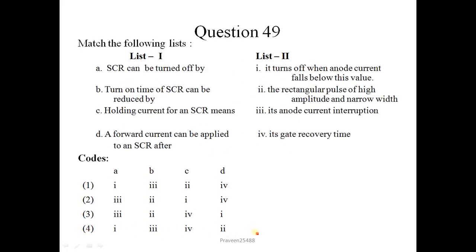Question number 49: Match the following list. SCR can be turned off by its anode current interruption. The turn on time of SCR can be reduced by the rectangular pulse of high amplitude and narrow width. Holding current for an SCR means it turns off when anode current falls below its value. A forward current can be applied to an SCR after its gate recovery time. Correct option is 2.